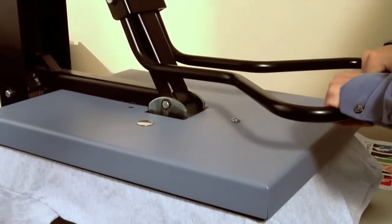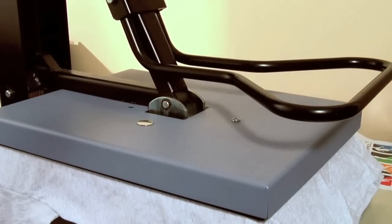Place the blank garment on your heat press and preheat for 10 seconds to remove any wrinkles and moisture.